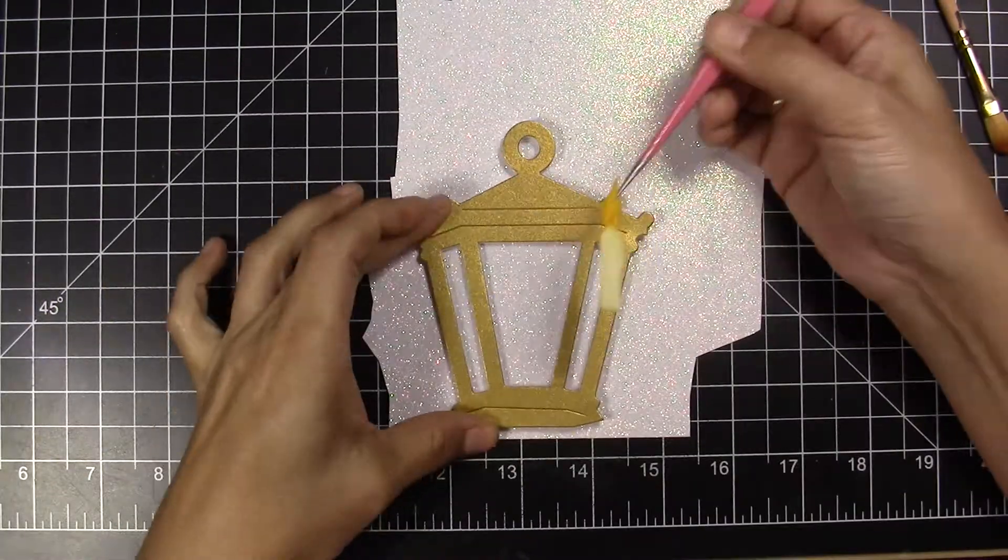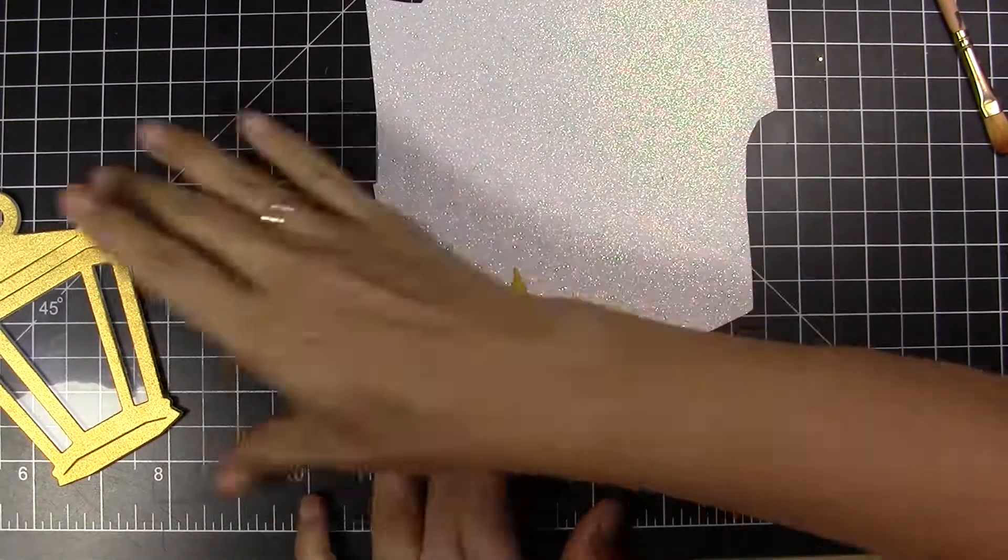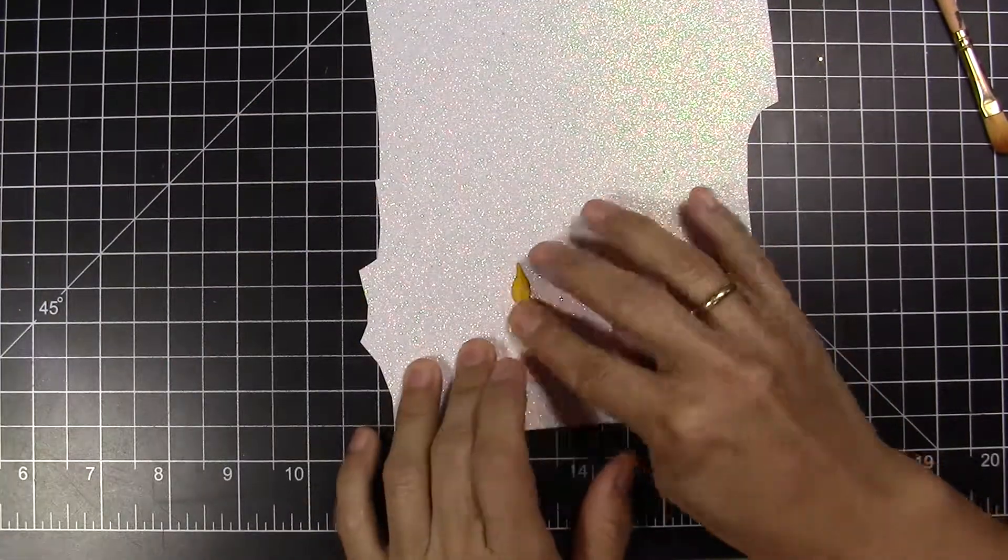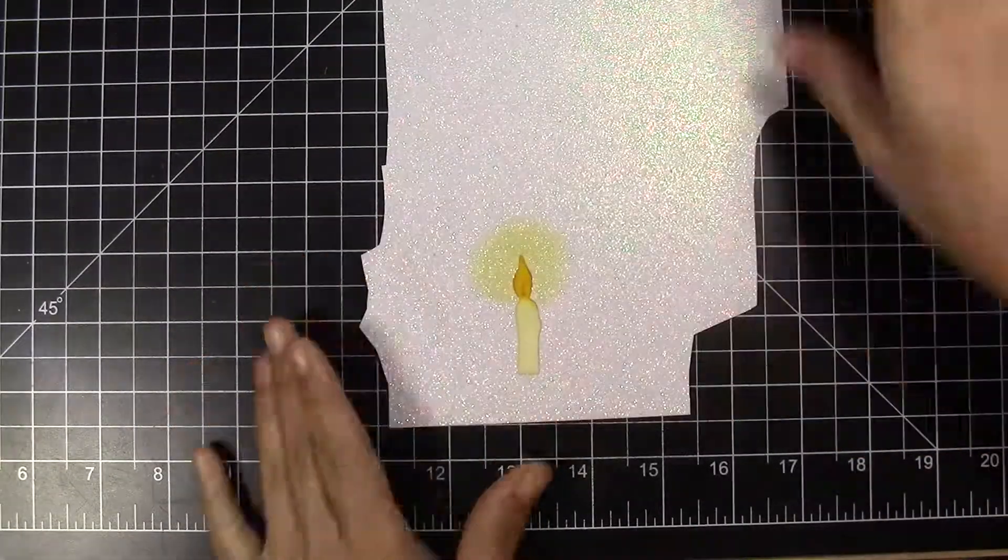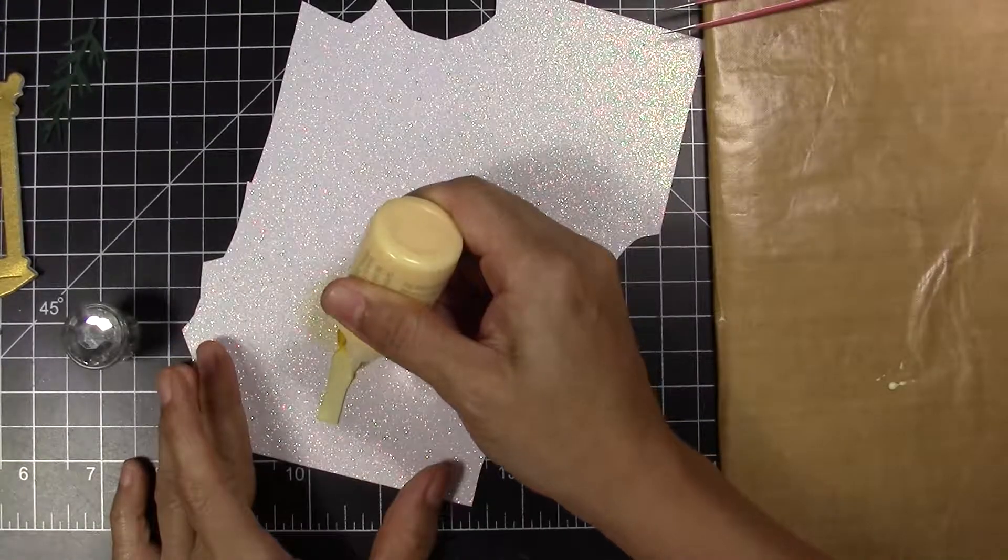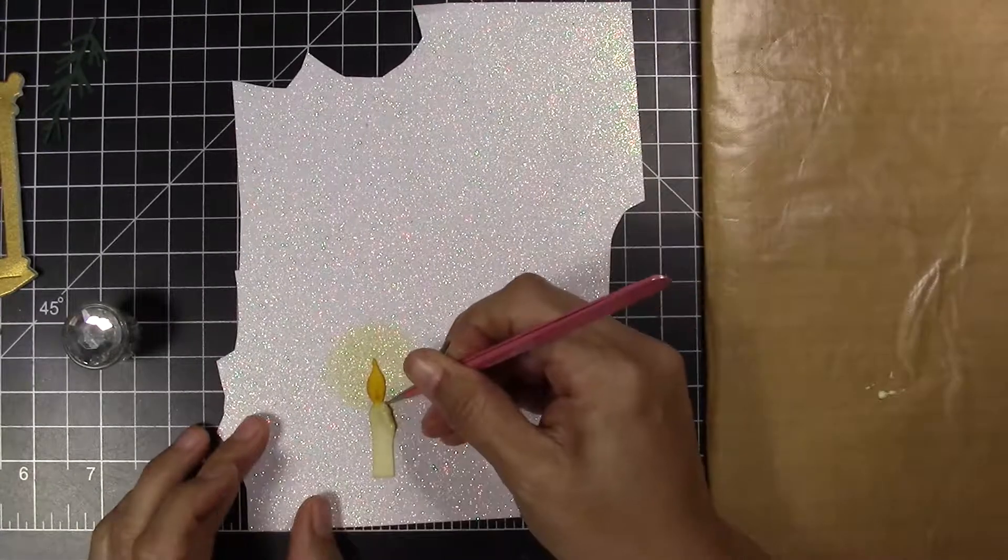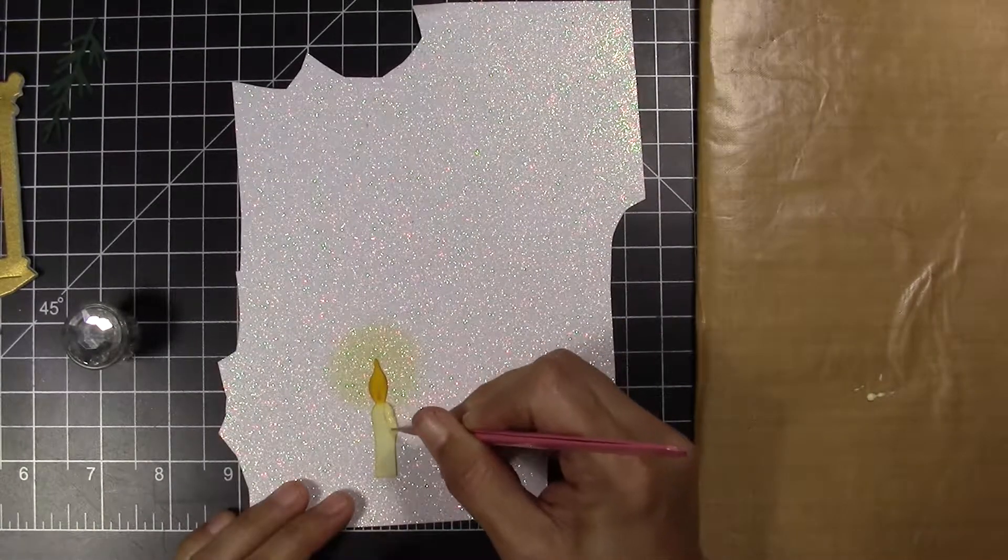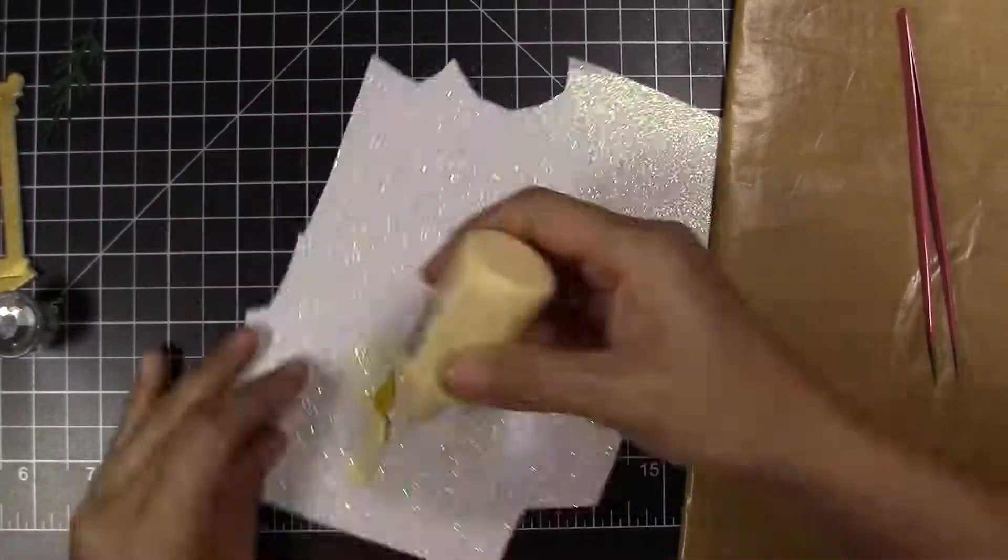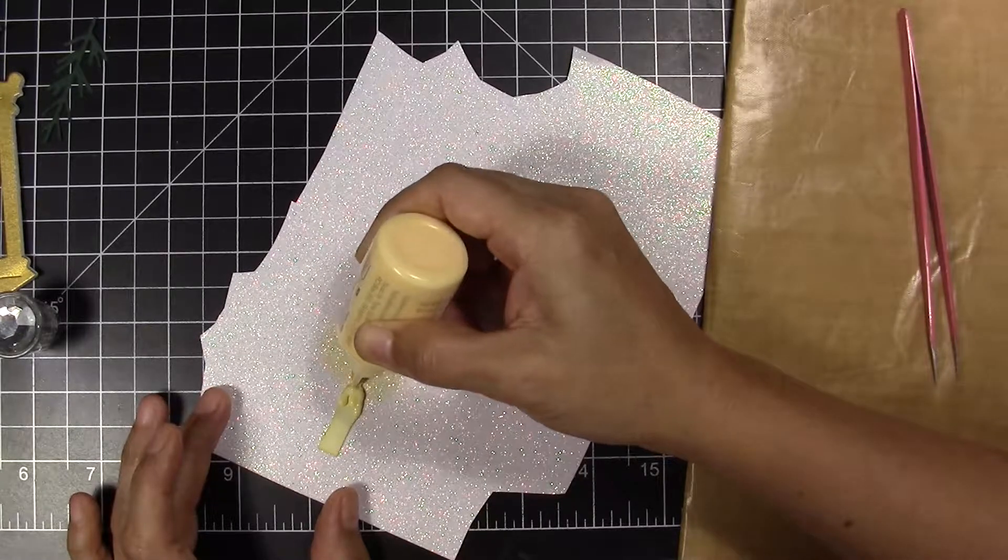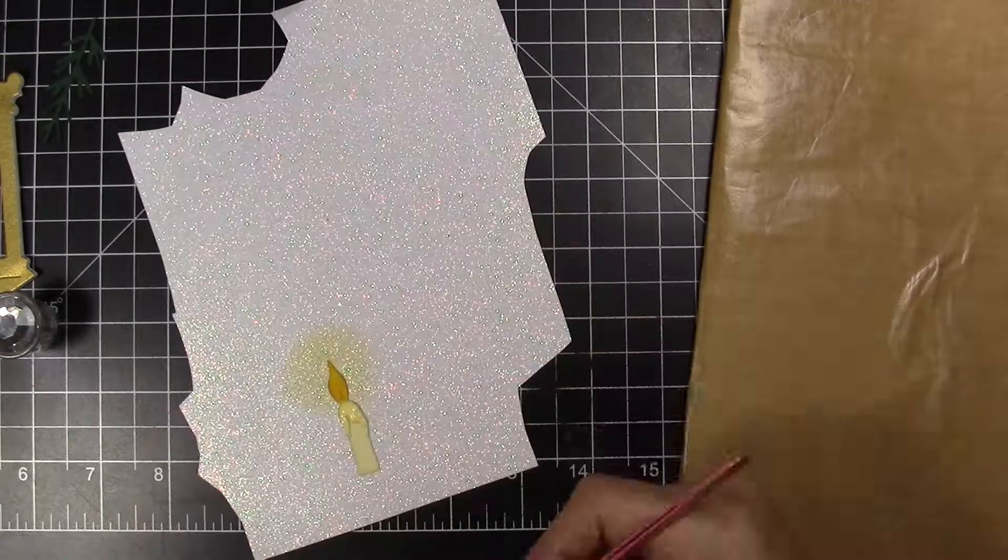I'm going to add Nuvo Drops in the same color of the paper that I used to make the candle, and I'm going to add glossy accent on the top of the candle. I also make a circle like the candle is lit up around the candle using yellow—I think it was Mustard Seed with Distress Ink.